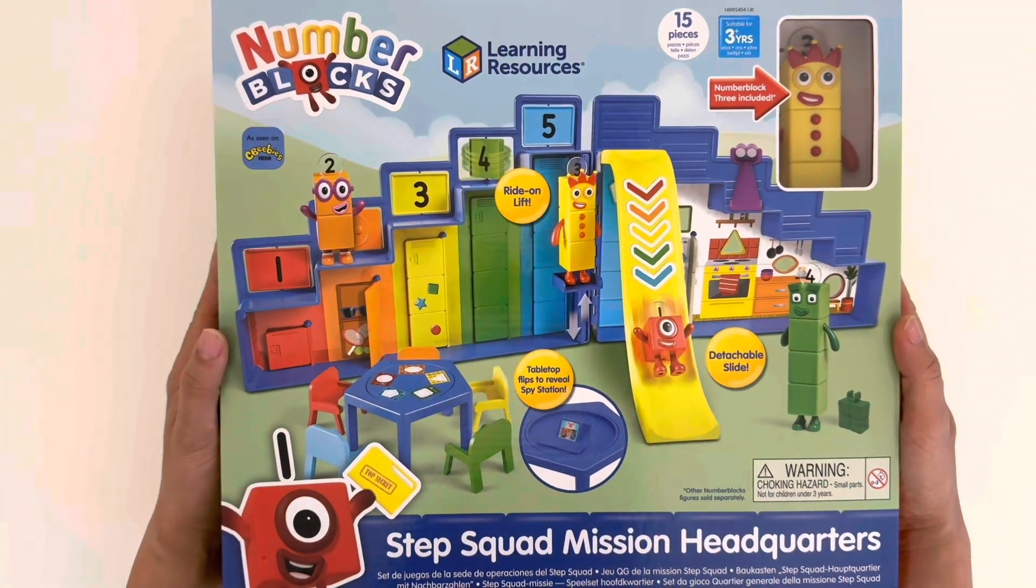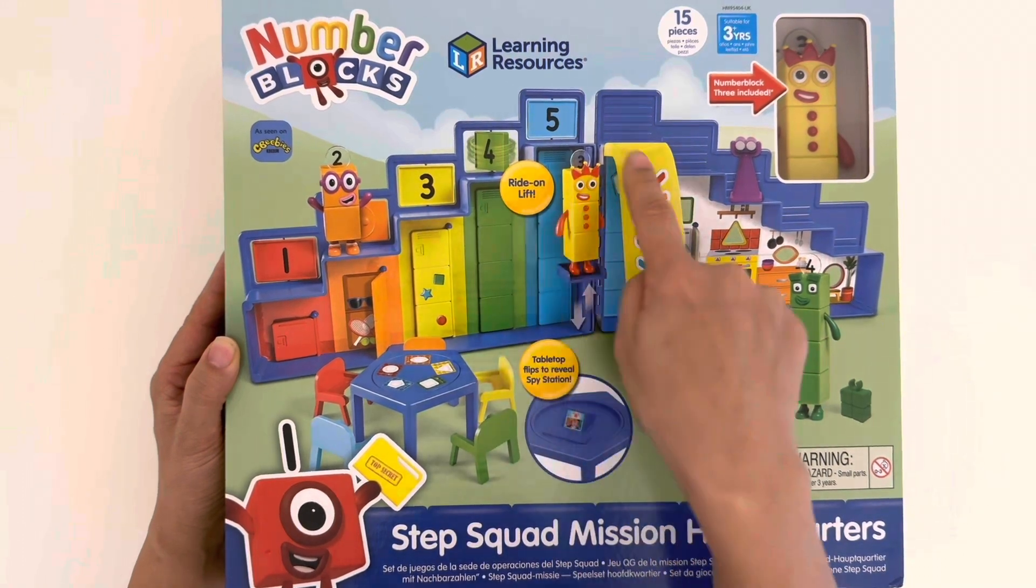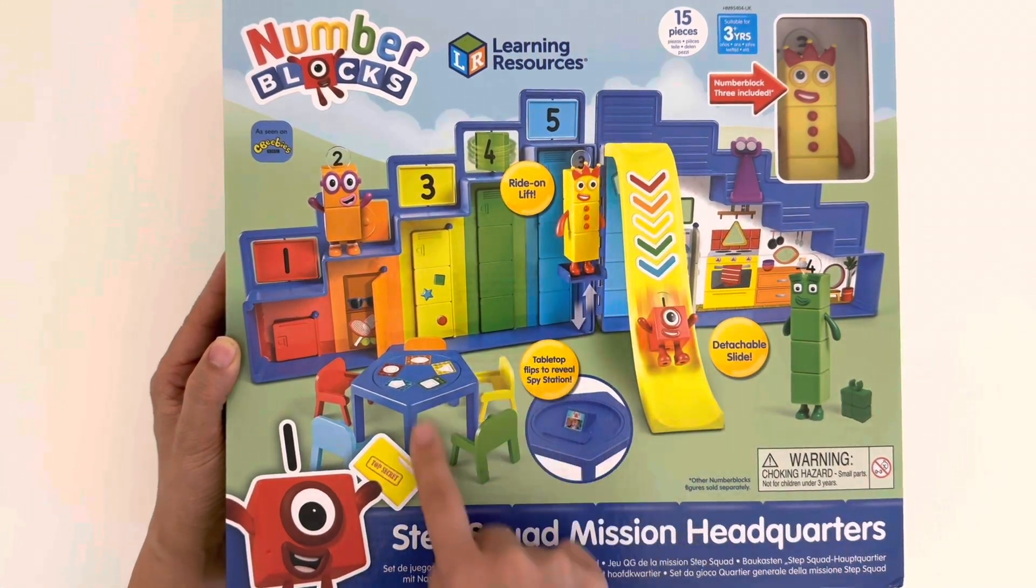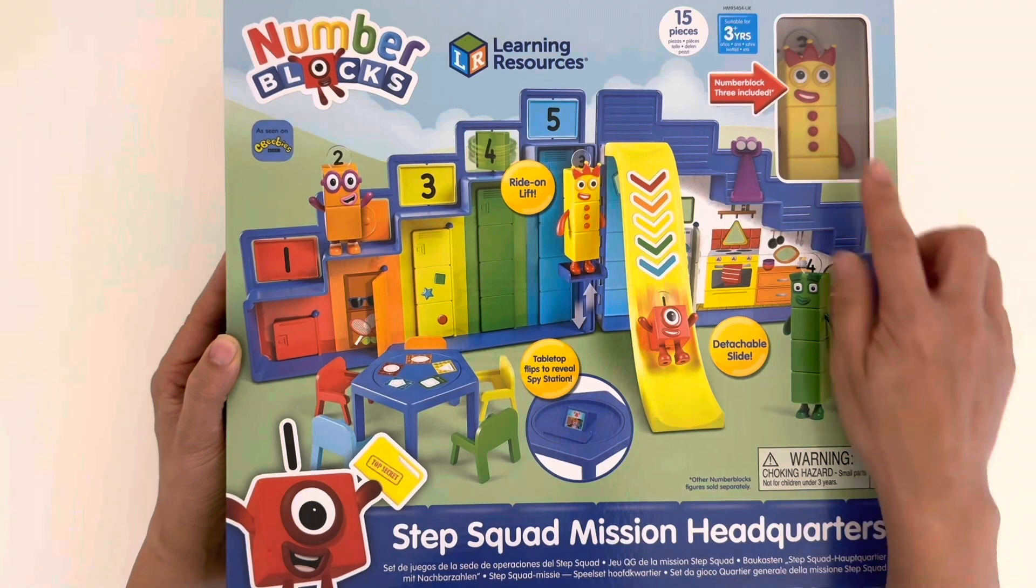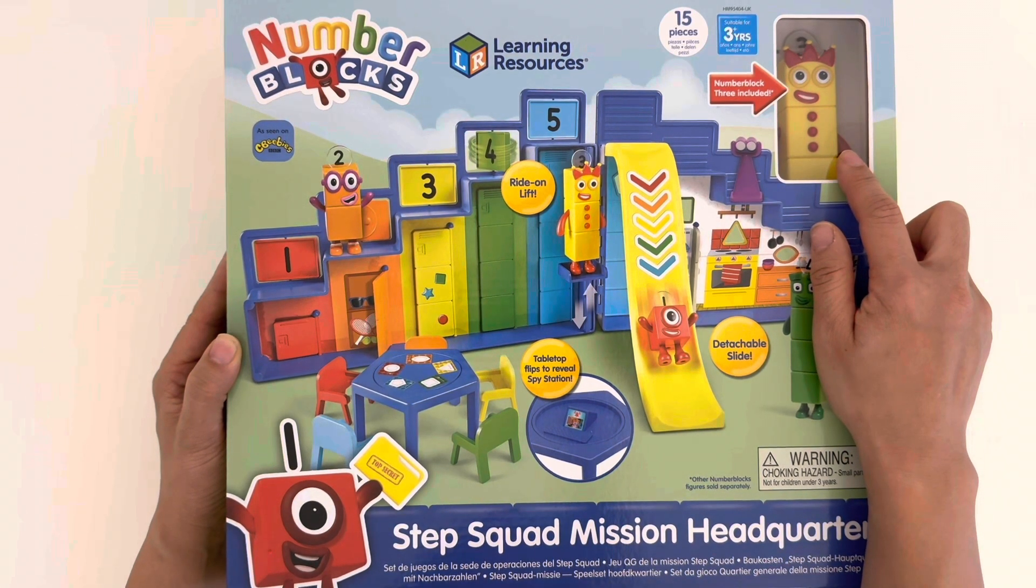So let's take a look at the front of the box. There's the playset opened out, there's a ride-on lift and a detachable slide. It comes with additional pieces as well as a Number Block 3 friend character, which is great so we can start playing straight away.